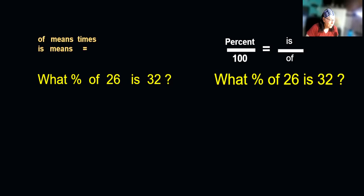The first thing I need you to see, up on the left side here: 'of' means times, and 'is' means equals. I need you to remember that — of means times, is means equals. When I see the word 'what' or 'what percent,' I'm going to call that P. Use whatever letter you like; since we're using percent, I'm going to use P for percent.